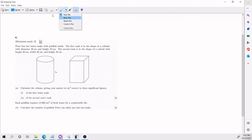Hello everybody. Today we will be going over an IB Math AISL geometry problem. Here we have Peter. Peter has two water tanks with goldfish inside. The first tank, which is this guy here, is in the shape of a cylinder.